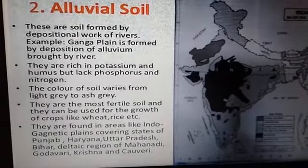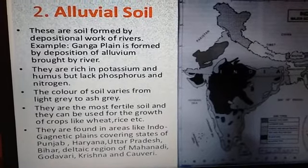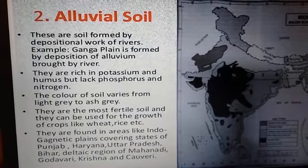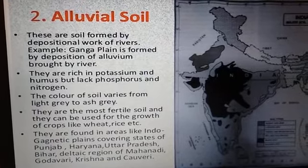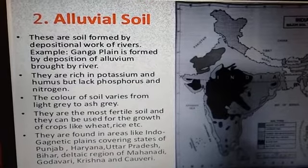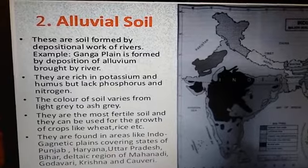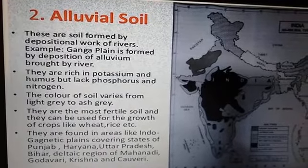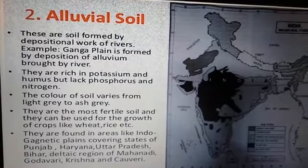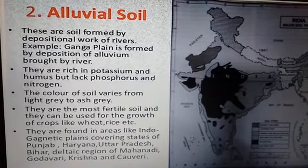Now we will study about alluvial soil. These are soils formed by the depositional work of rivers. When river water comes down from mountains, it carries silt, clay, and many sediments. The material that is deposited and collected is called alluvium, and the soil formed from it is called alluvial soil.